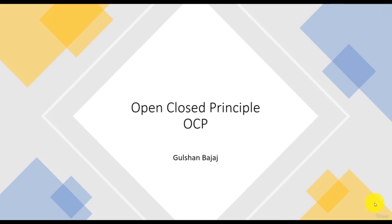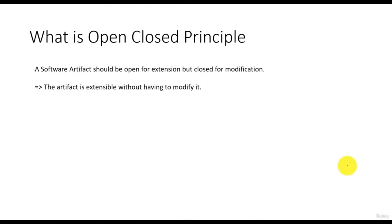Let's discuss the next design principle — open-closed principle in this chapter. This principle says that a software artifact should be open for extension but closed for modification. It means that once developed or finalized, a software artifact, for example a class, should be open for extension — that is handling new or modified requirements — but it should be closed for modification or change due to new or modified requirements.